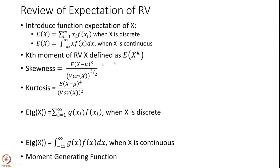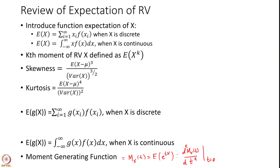We also defined the kth moment of x as the expected value of x to the power k, and we defined a moment generating function m of t. This moment generating function m sub x of t is defined as the expected value of e to the power tx, and the property is that the kth derivative of m_x(t) with respect to t, evaluated at t equals zero, gives you the expected value of x to the power k. That is why it is called the moment generating function.